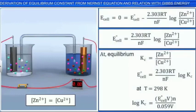For this situation, the Nernst equation can be written as shown here. However, at equilibrium, equilibrium constant Kc is equal to concentration of zinc 2 ions over the concentration of copper 2 ions.